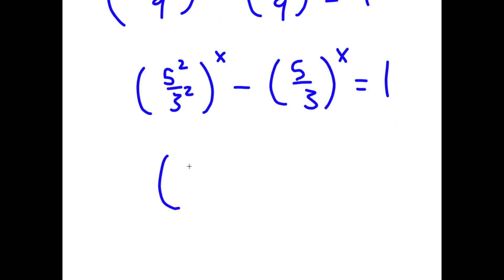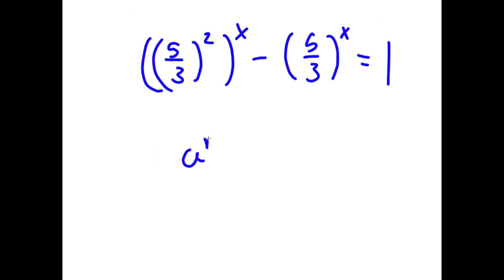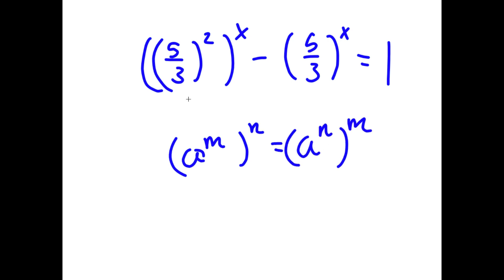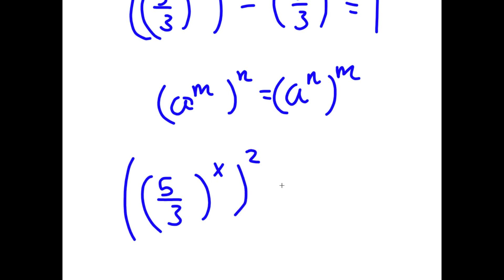So I have (5/3 squared) to the power of x minus (5/3) to the power of x is equal to 1. Using the rule that (a^m)^n equals (a^n)^m, I rewrite this as (5/3)^x all squared minus (5/3)^x is equal to 1.